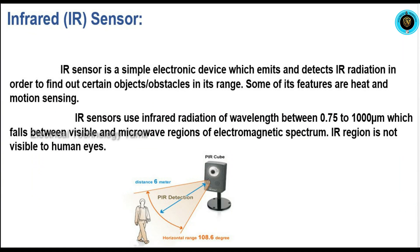IR sensor is a simple electronic device. If you are using an IR sensor, you can detect objects. You can also control heat and motions using an IR sensor.